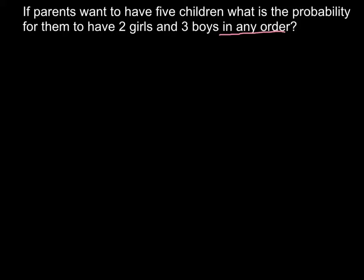For example, what are the chances for the first child to be a girl? This is very easy — the chances are one half. So a girl would have a one half chance to be the first child. What are the chances that the second child would also be a girl? Once again, the chances are one half. And what are the chances that the third child would be a boy? Once again, chances would be one half.